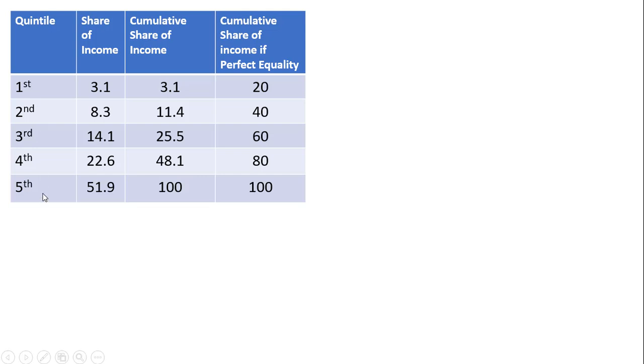First, second through fifth income quintile, and the share of income. Then I created this column, the cumulative share of income.